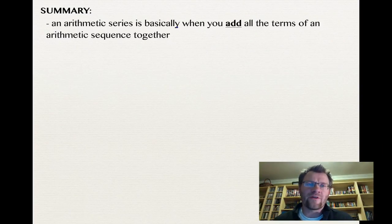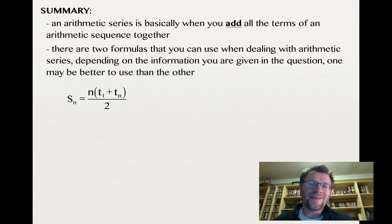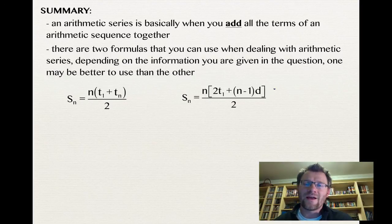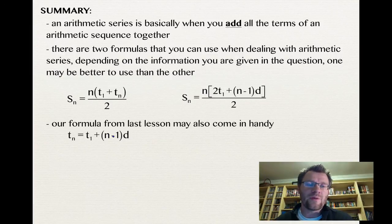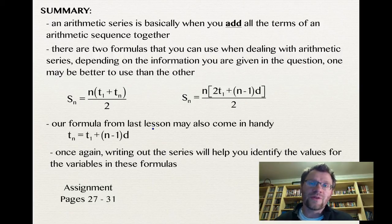In summary, an arithmetic series is the sum of all terms of an arithmetic sequence. There are two formulas depending on the information given: SN = N(T1 + TN) / 2 when you know the first and last term; and SN = N[2T1 + (N−1)D] / 2 when you know the first term, number of terms, and common difference. The TN formula from last lesson — TN = T1 + (N−1)D — may also help. Writing out the series will help identify variable values. Your assignment is on pages 27 to 31.